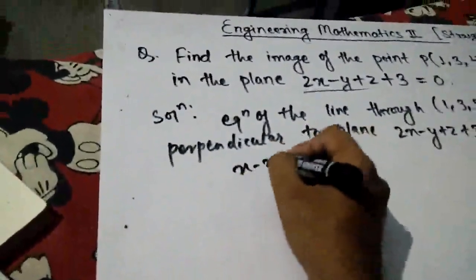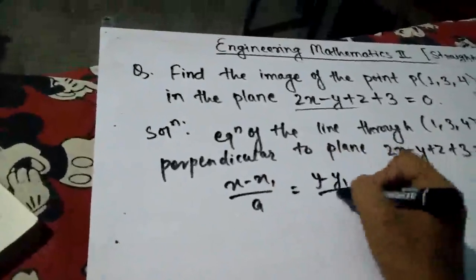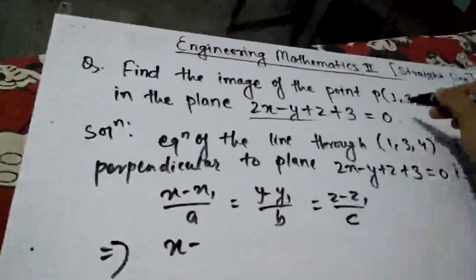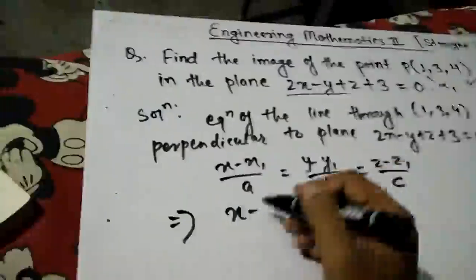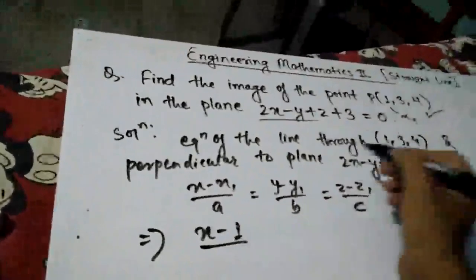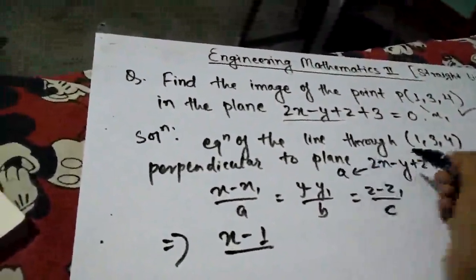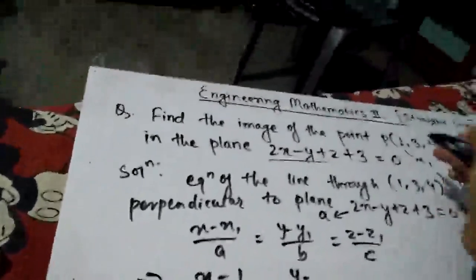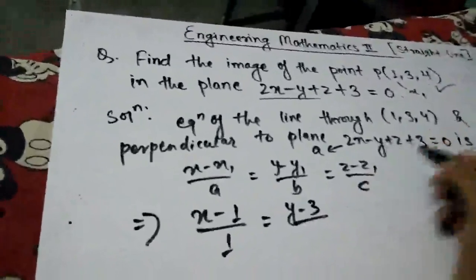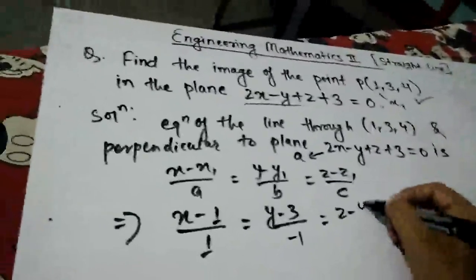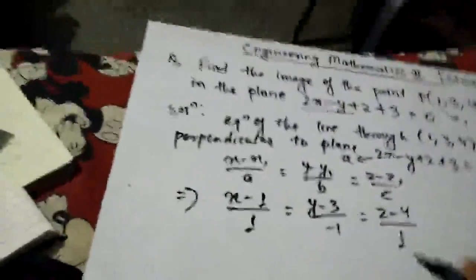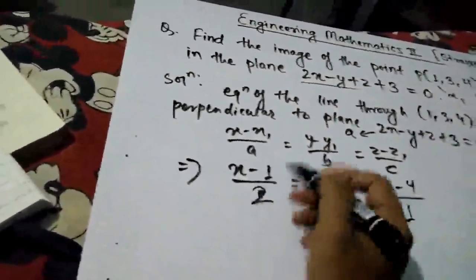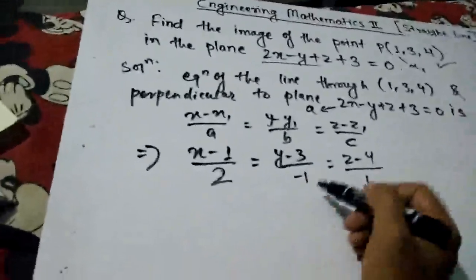The equation of the line is: x minus x1 upon a, y minus y1 upon b, z minus z1 upon c. Here x1 is 1, a is 2, b is minus 1, and c is 1. So we have x minus 1 upon 2, y minus 3 upon minus 1, z minus 4 upon 1.